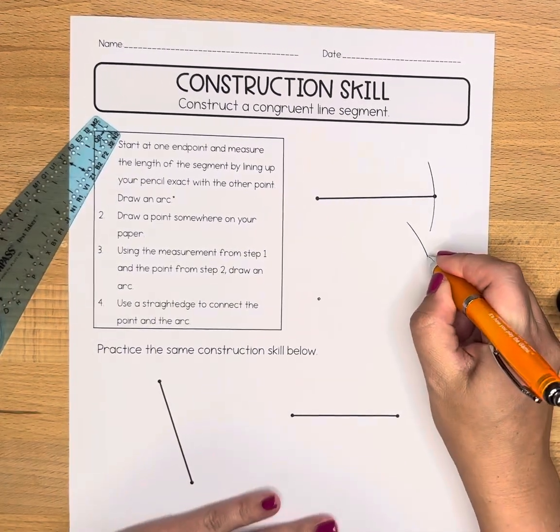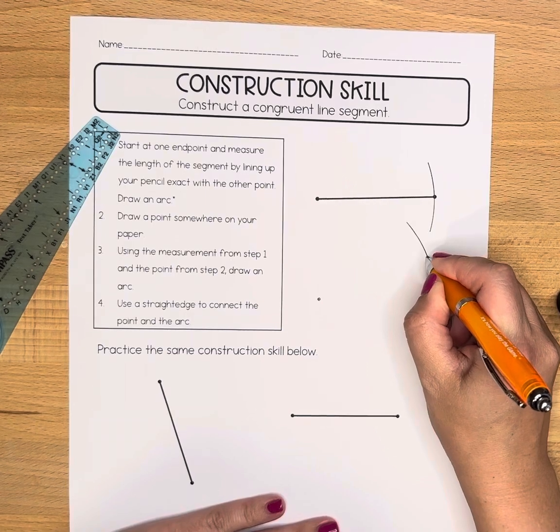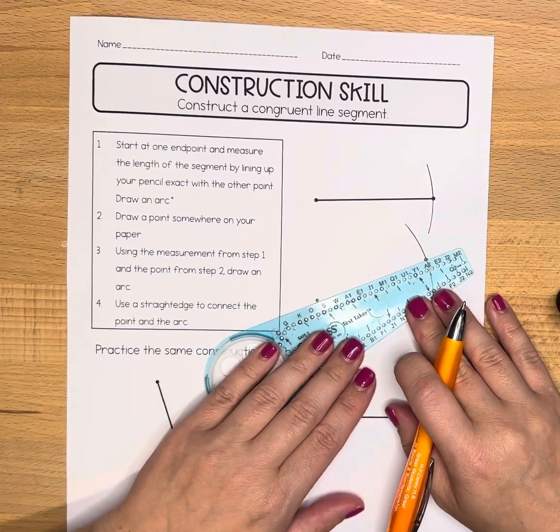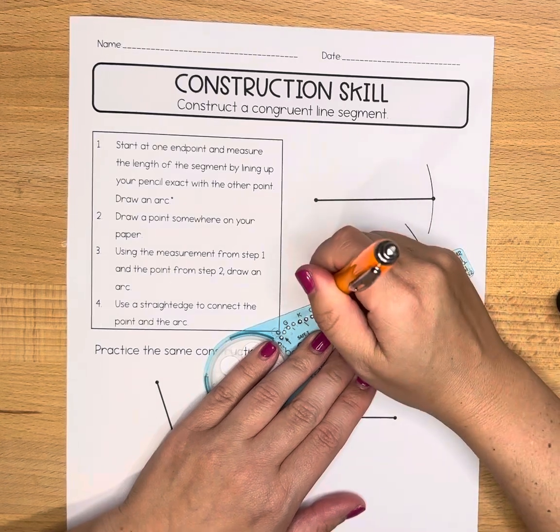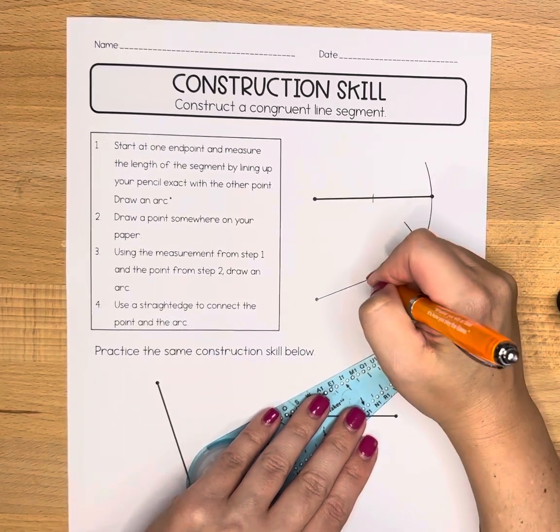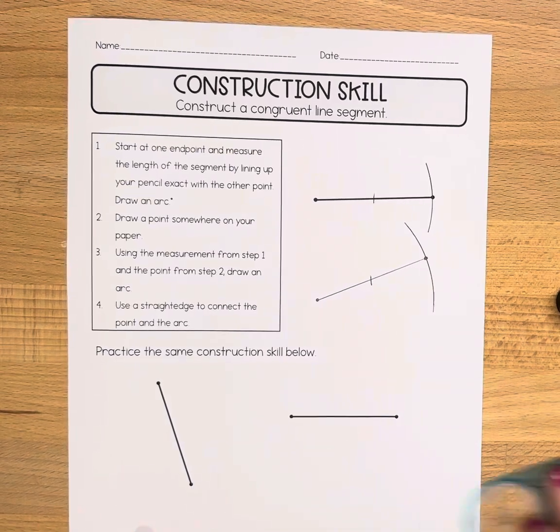I'm going to pick any point on this arc. When I connect these two points, these two line segments will be congruent to one another.